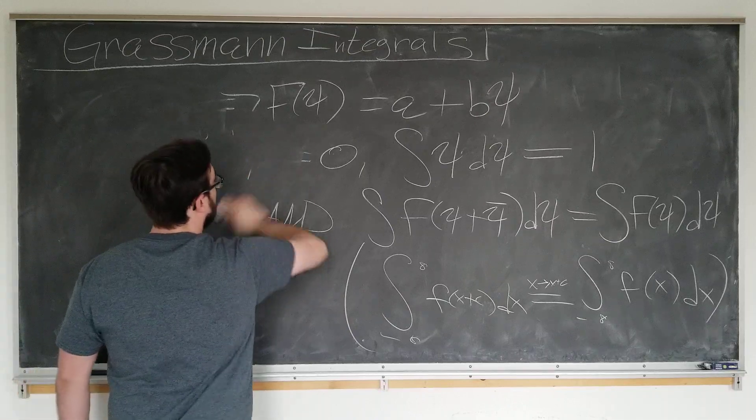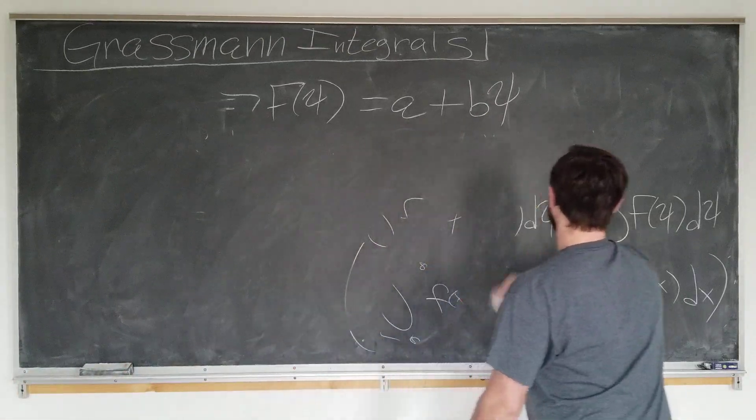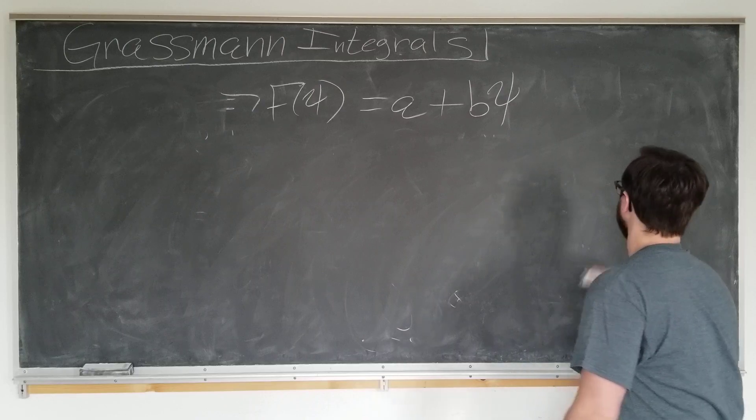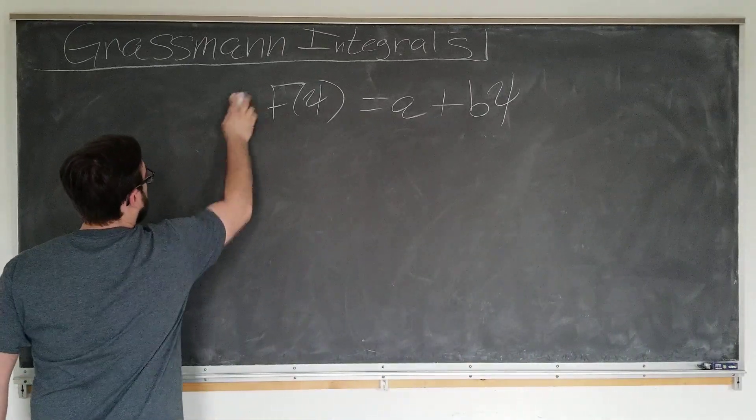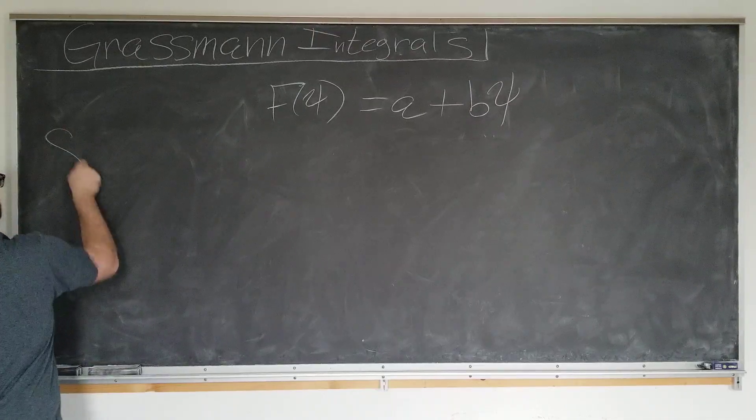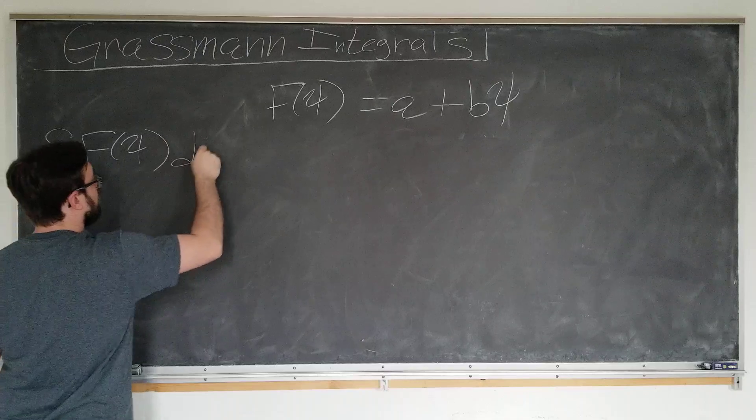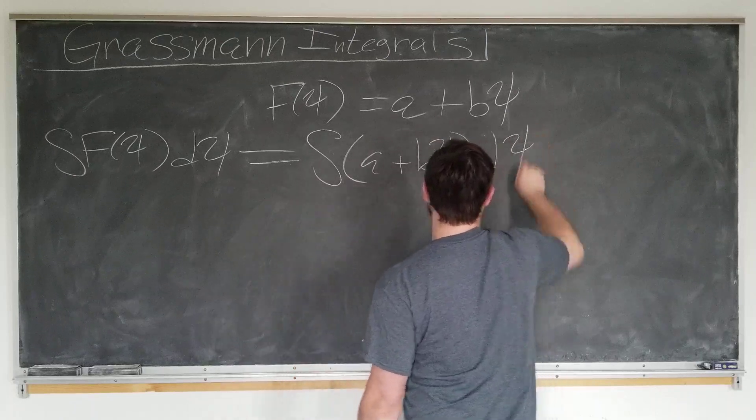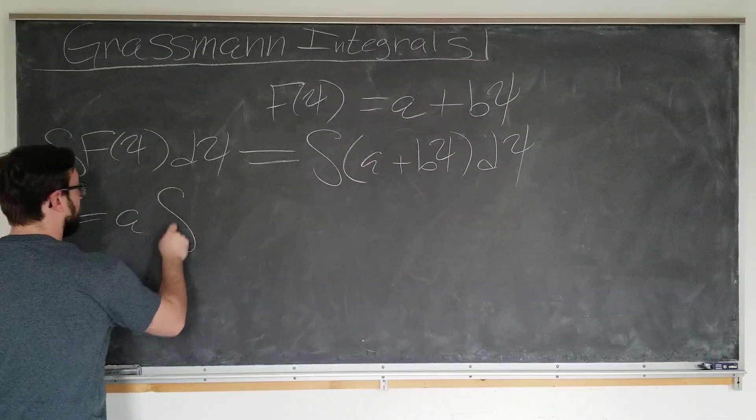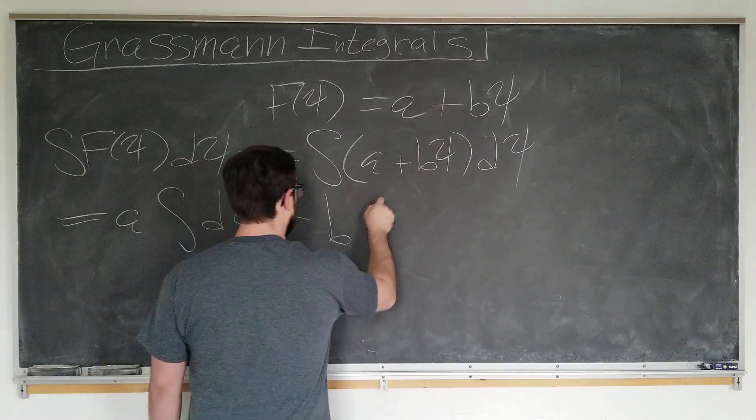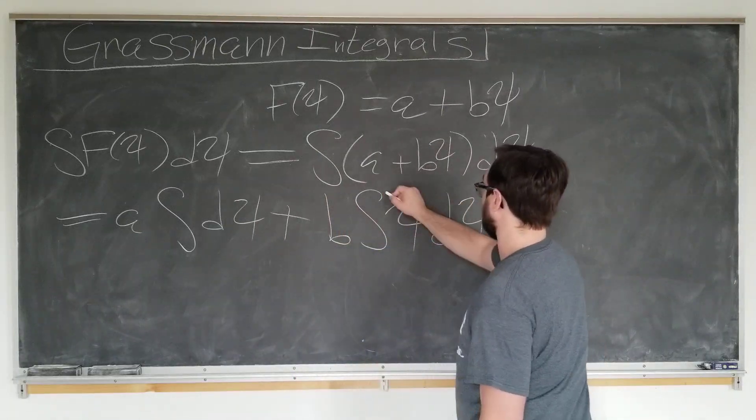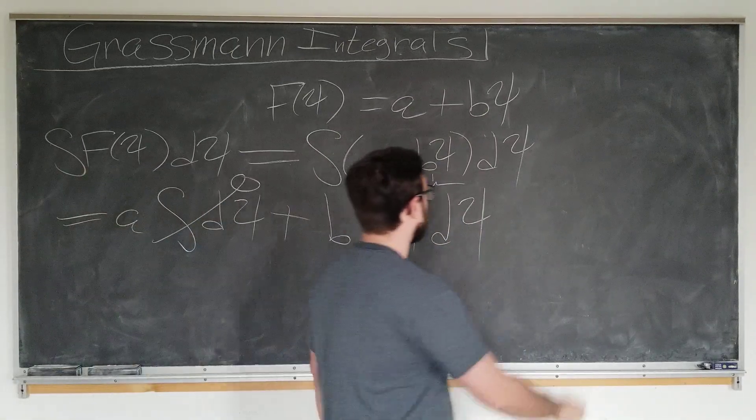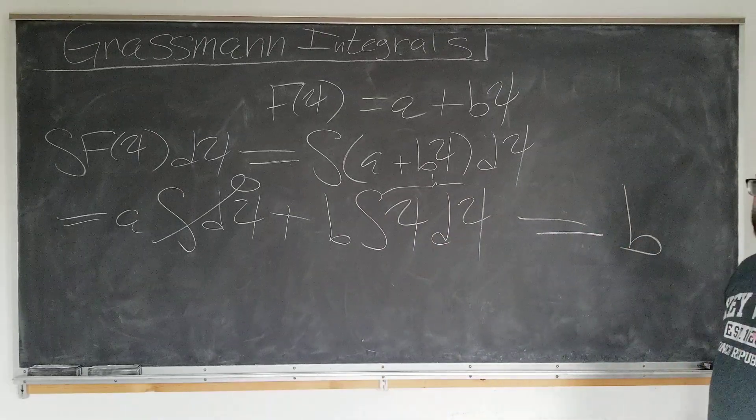Okay, so now we are ready to integrate all functions of a Grassmann variable with just these two simple rules. So integral of f of psi d psi is just integral of a plus b psi d psi, which from linearity of integrals is a d psi plus b integral of psi d psi. And this one is one, and this one is zero. Easy peasy.